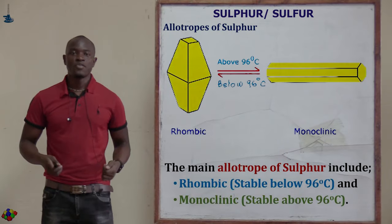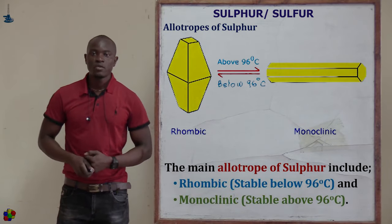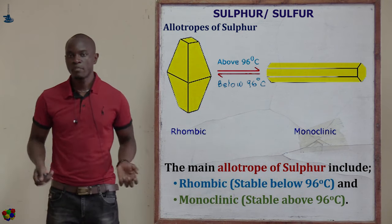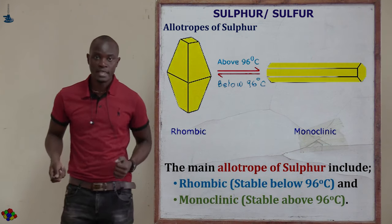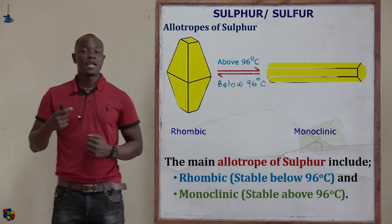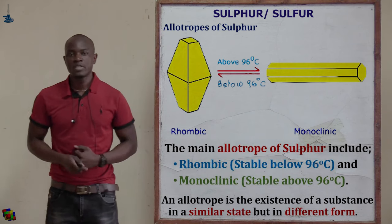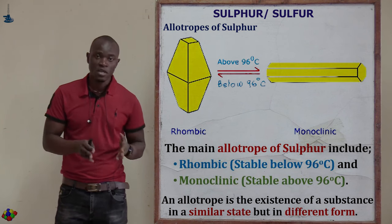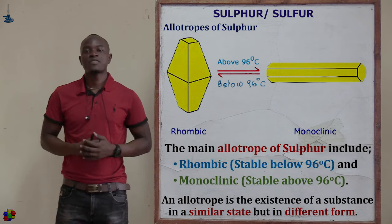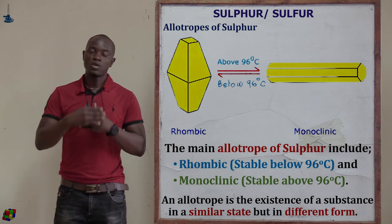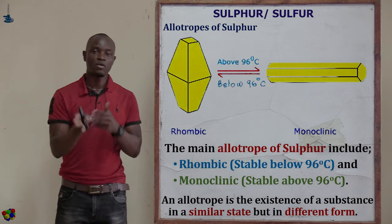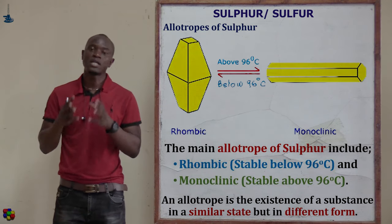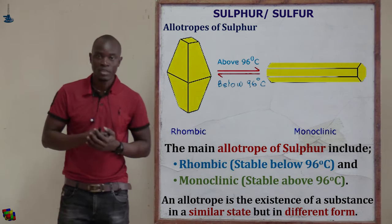Let's look at the allotropes of sulfur. We have two main types: rhombic sulfur and monoclinic sulfur. An allotrope is the existence of a substance in the same state but in different forms. These allotropes of sulfur are all sulfur, but we have sulfur which is rhombic and sulfur which is monoclinic — same substance, different forms.